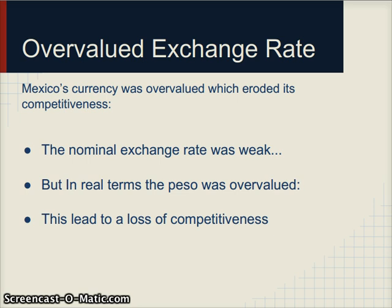In terms of the exchange rate, Mexico had an overvalued exchange rate. Although the nominal exchange rate was weak, in real terms the peso was overvalued because inflation was quite high. Inflation typically makes your currency overvalued because goods in your country become more expensive relative to imported goods. For example, if a Big Mac costs one dollar in Mexico and one dollar in the US, and inflation is twenty percent in Mexico, the next year it costs $1.20, whereas if inflation is only five percent in the US, it costs $1.05.